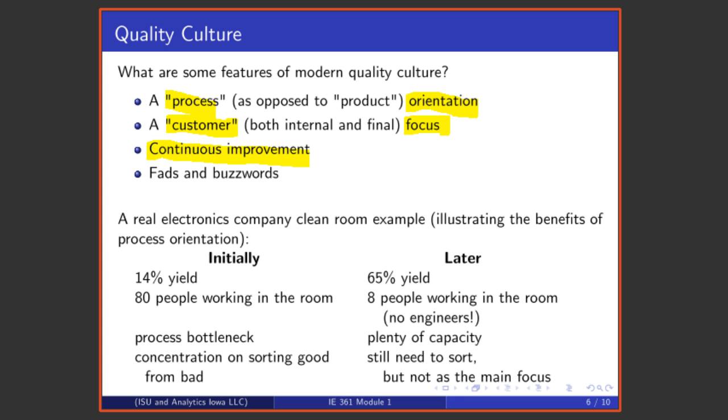Let me talk for a second about a real example that illustrates very well the importance of the first of these emphases, the process orientation. I was once shown a clean room at an electronics company. A clean room is a facility in which integrated circuit chips are manufactured. I was shown this clean room and told that sometime earlier, perhaps a year before, that clean room was yielding a 14 percent yield. 86 percent of the chips made there were simply junked. They were no good. At the time there were 80 people working in that room, and that room was the bottleneck for a very important product of this company.